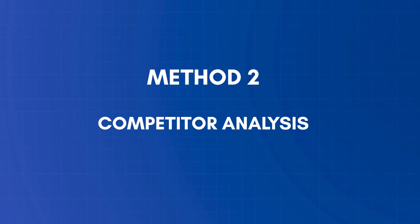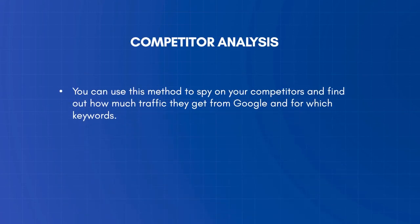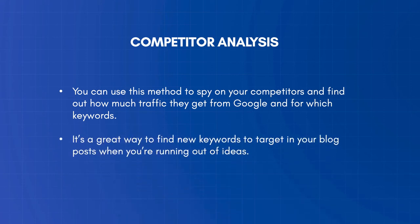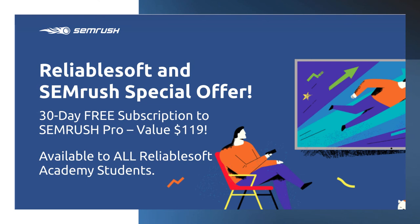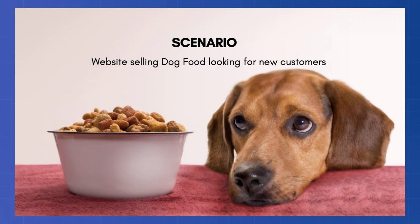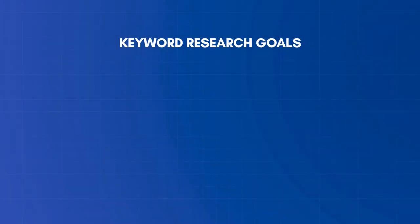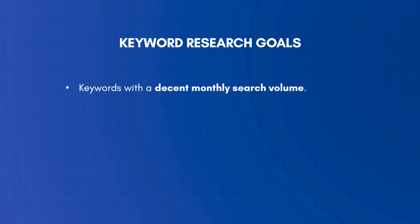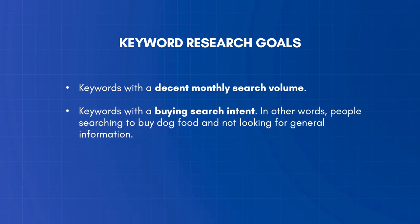Method 2: Competitor Analysis. You can use this method to spy on your competitors and find out how much traffic they get from Google and for which keywords. It's a great way to find new keywords when running out of ideas. I'll demonstrate using SEMrush, but you can also use Ahrefs or Ubersuggest. Let's assume you have a website selling dog food. The keywords should have a decent monthly search volume — any number above 50 is good — have a buying search intent, meaning people searching to buy dog food, not looking for general information.